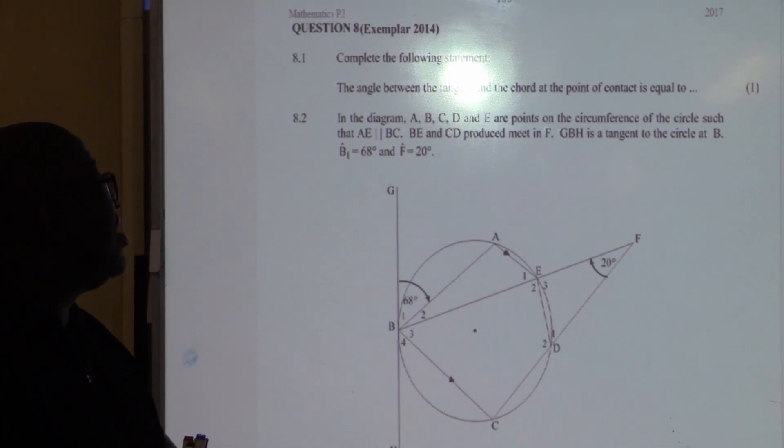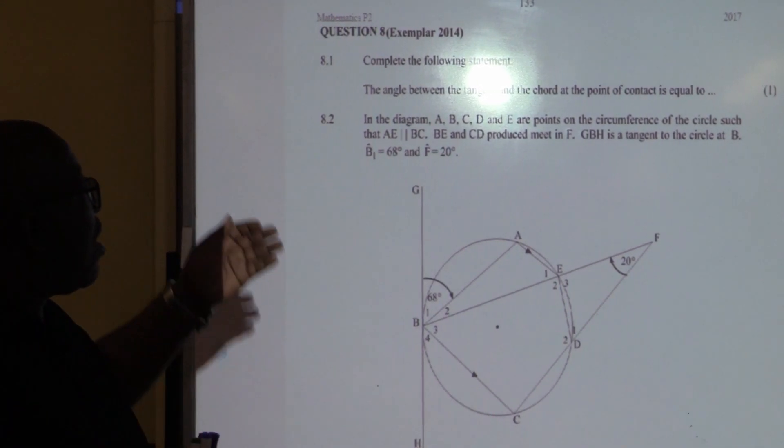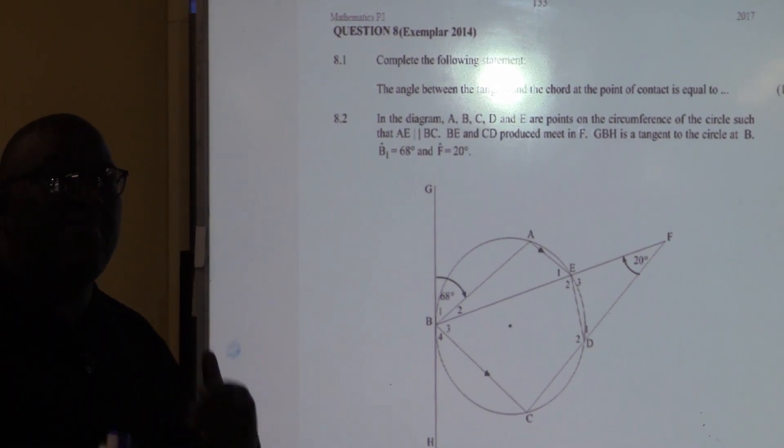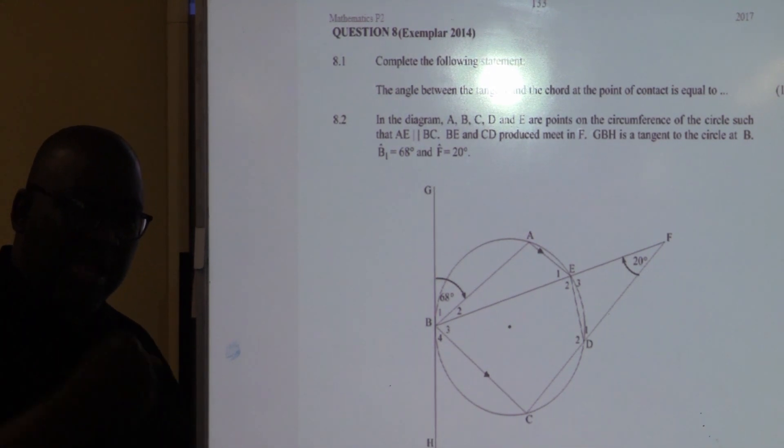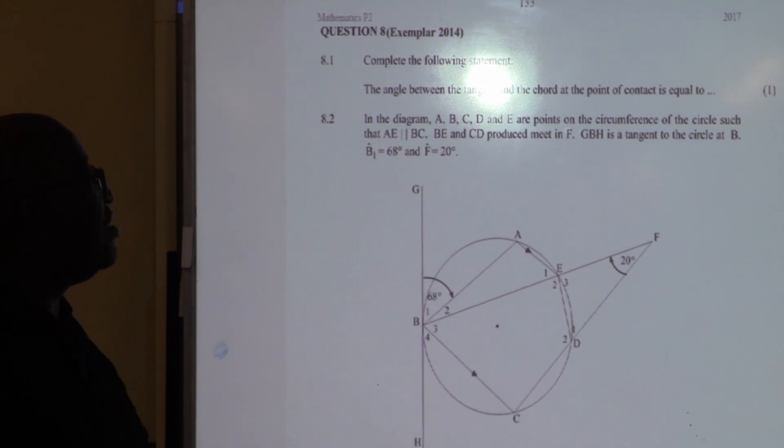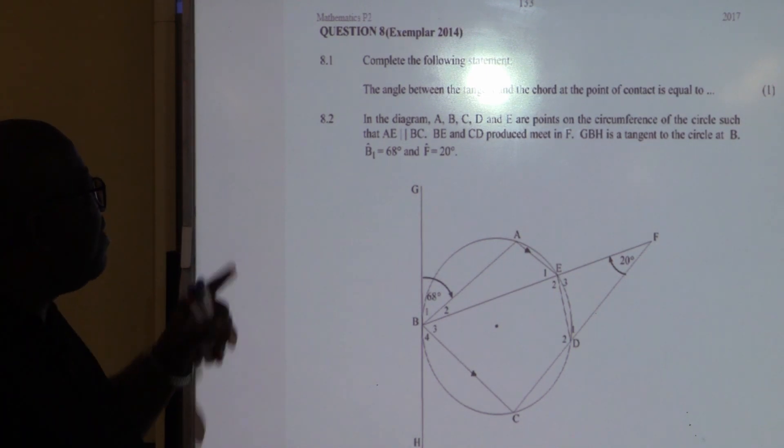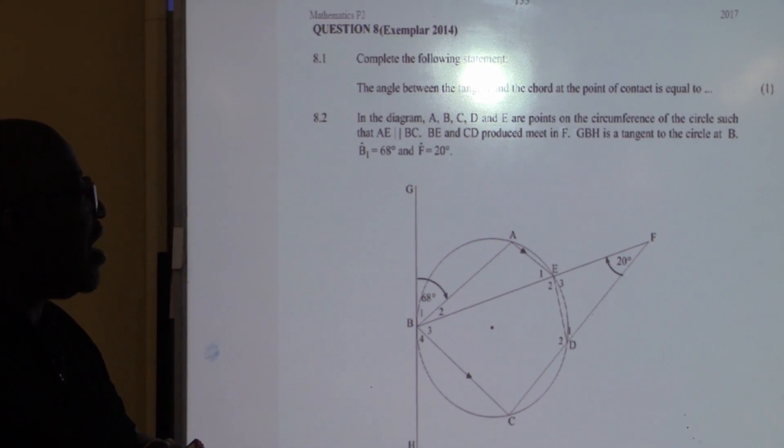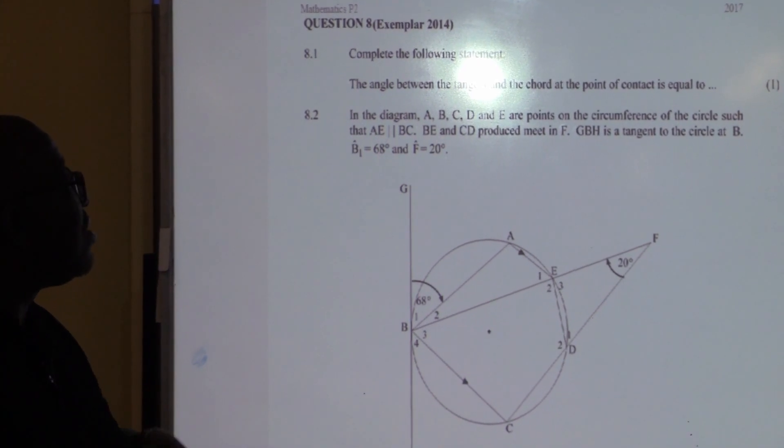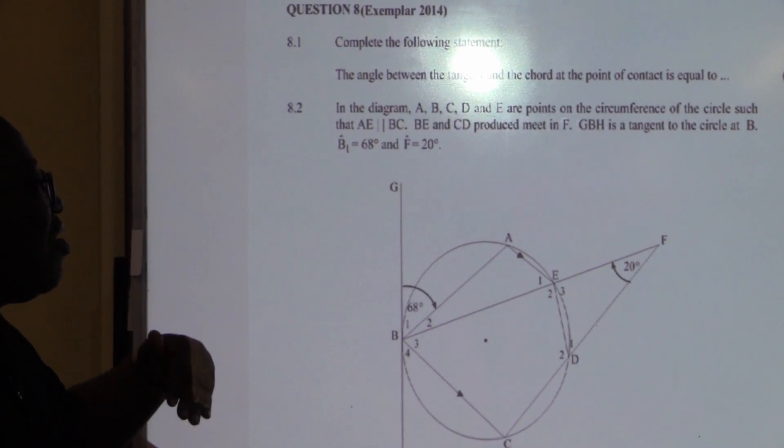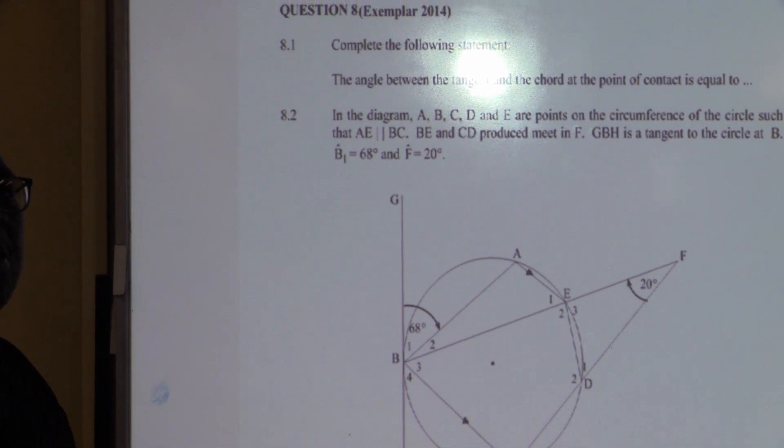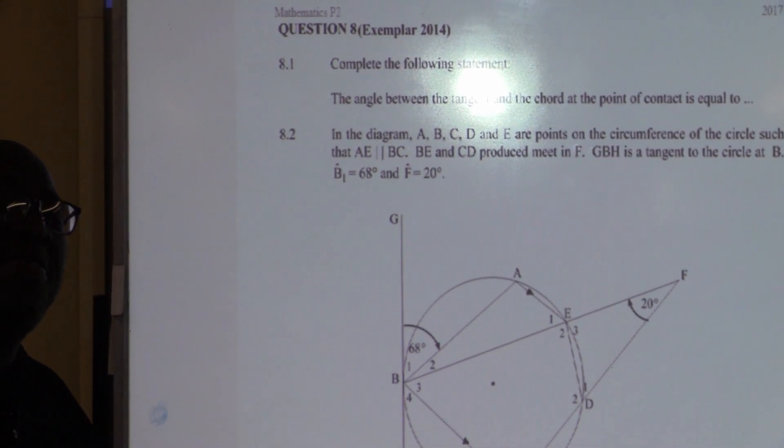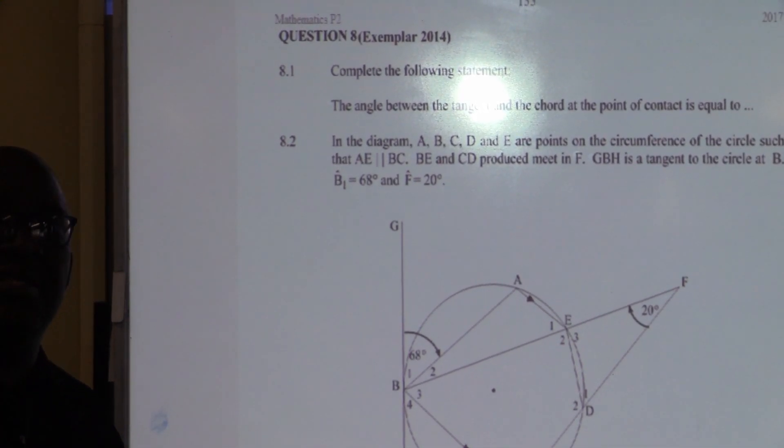Like you see here in the example of 2014, it was question 8. 8.1, complete the following statement. It means that we're giving you a theorem, you've got to complete it. The angle between the tangent and the chord at the point of contact is equal to... The angle between the tangent and the chord at the point of contact is equal to... The angle subtended by that chord in the alternate segment.